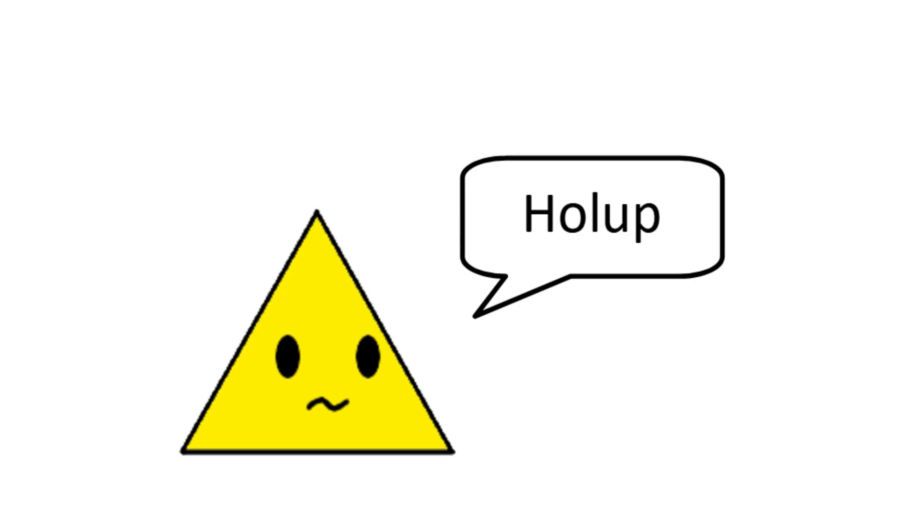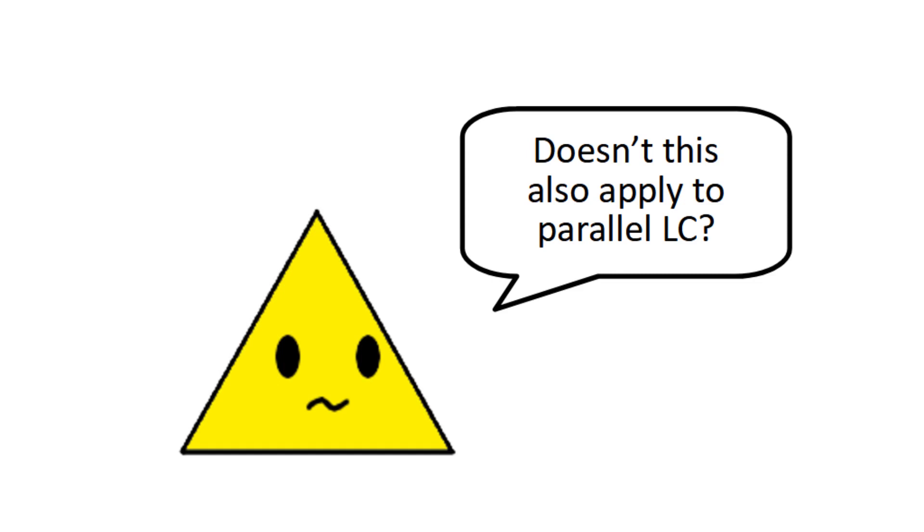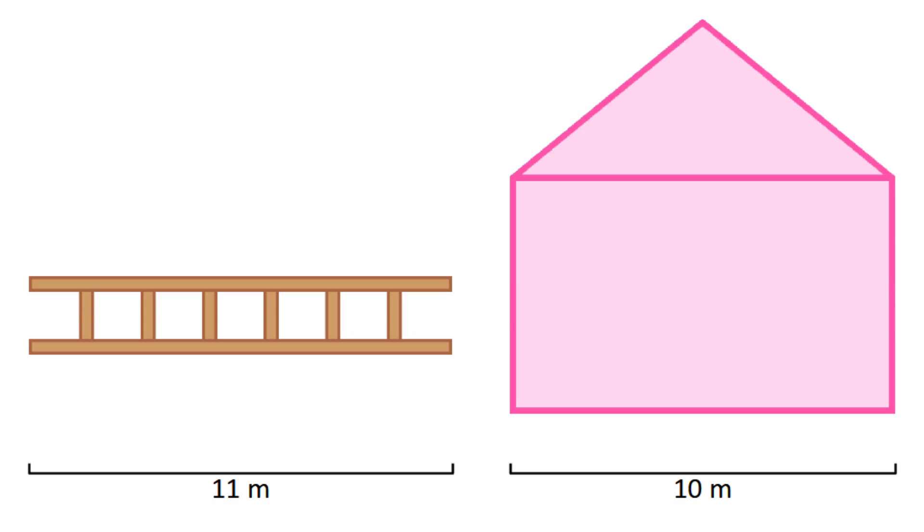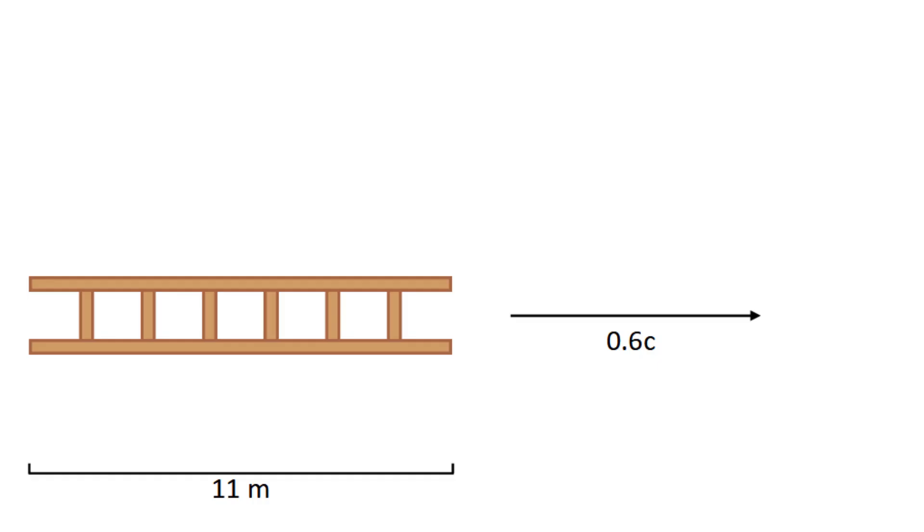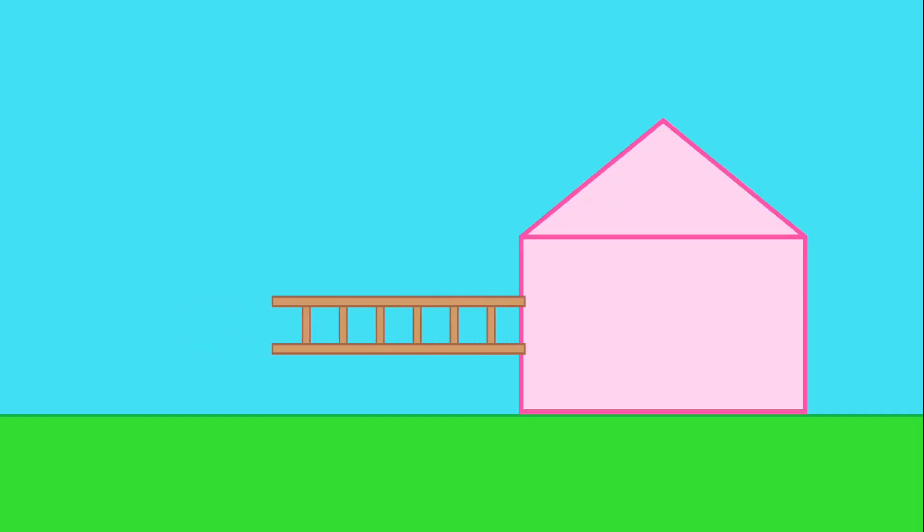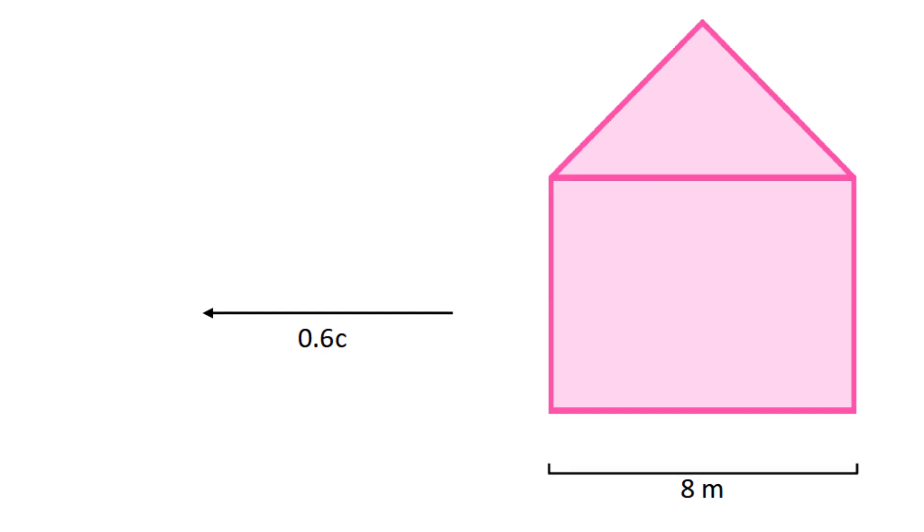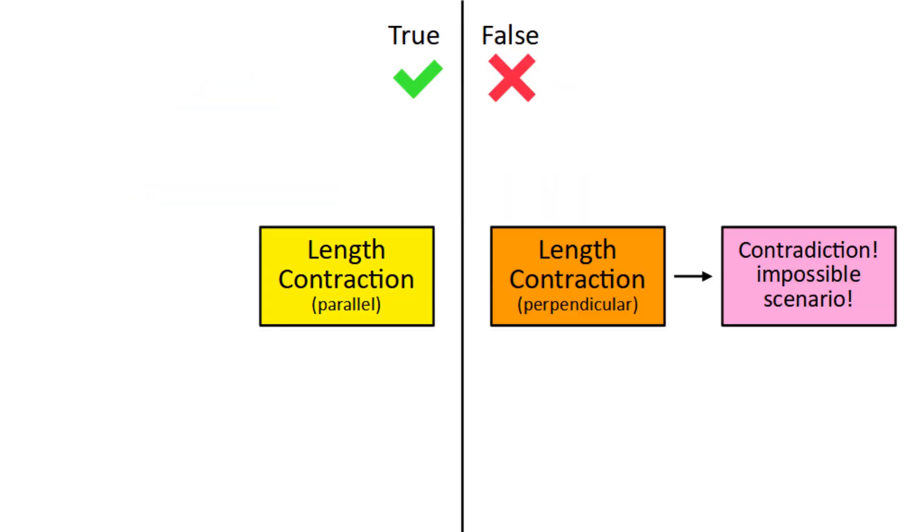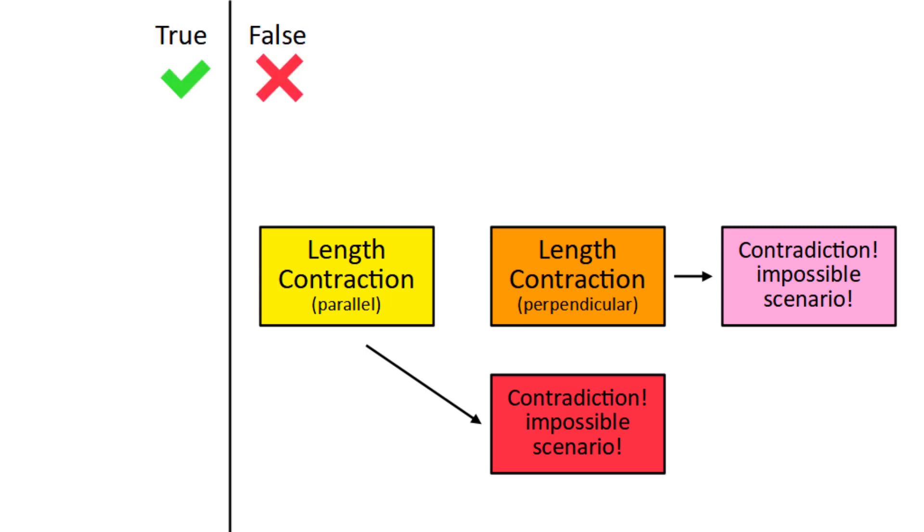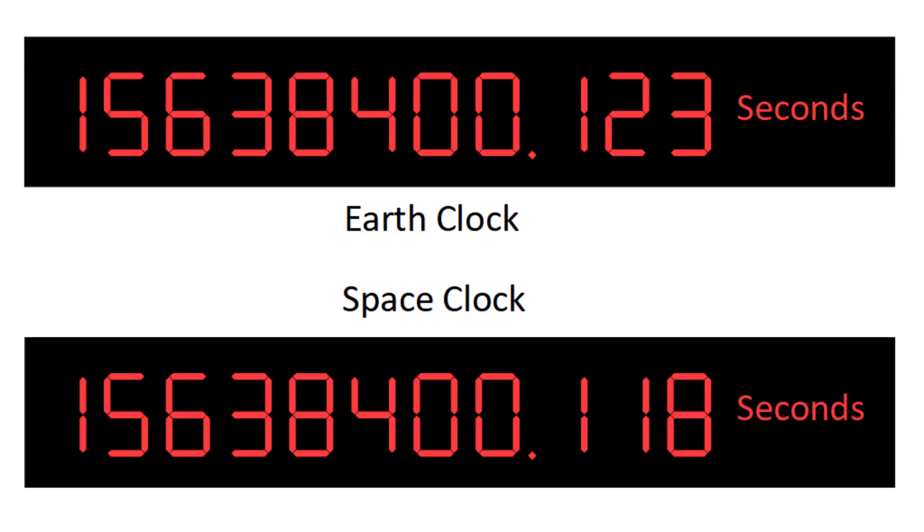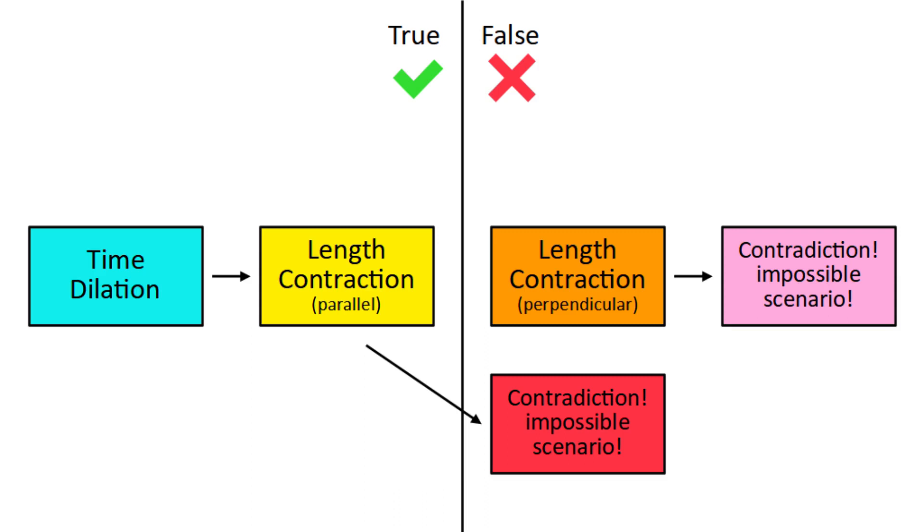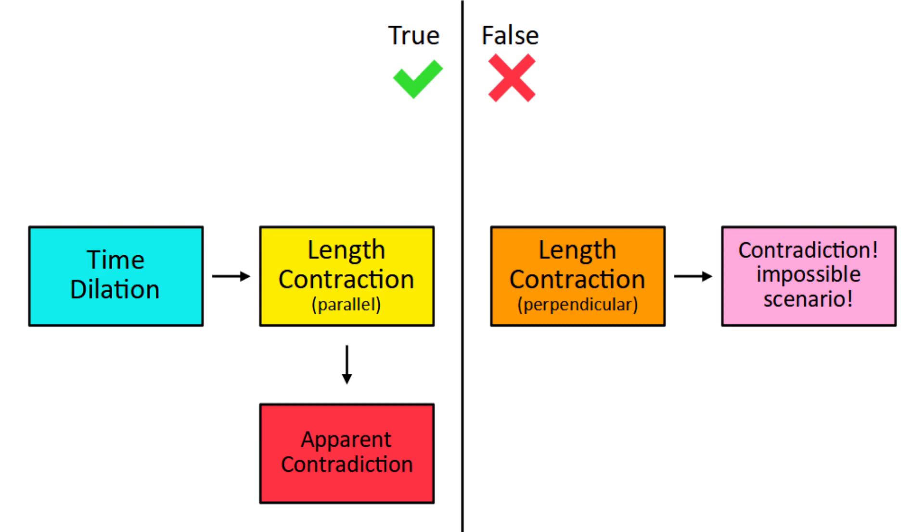But hold up a minute, couldn't we use the same logic to disprove length contraction in the parallel direction as well? Imagine an 11 meter ladder passing through a 10 meter shed. Usually it can't fit, but if it travels at 0.6c, the ladder's length is contracted to 8.8 meters, so it fits. In the ladder's own perspective though, the shed moves at 0.6c, so its length becomes 8 meters, but the ladder is still 11 meters and no longer fits. So again, in one reference frame it fits, but in the other one it doesn't. This seems like another contradiction, so that would mean length contraction can't be true. But here's the thing, length contraction was a consequence of time dilation. You can't have one without the other, and we've seen the evidence for time dilation, so that can only mean one thing. This situation is not a contradiction, only an apparent contradiction. And as it turns out, this is the second most famous paradox in relativity, the ladder paradox.